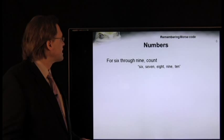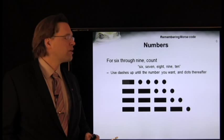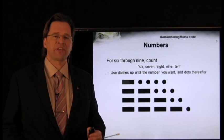For 6, 7, 8, and 9, simply count from 6 to 10: 6, 7, 8, 9, 10. Only now, use dashes up until the number you want, and dots thereafter. For example, 8 would be represented by 6, 7, 8, 9, 10.